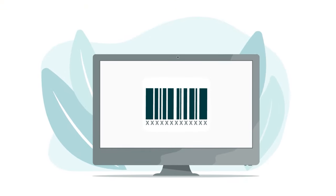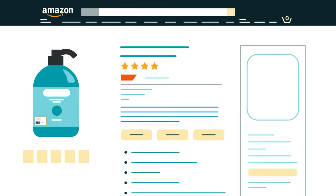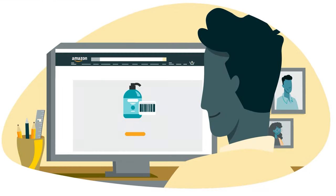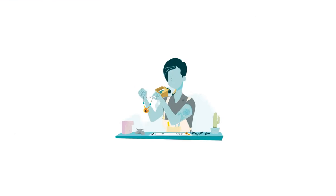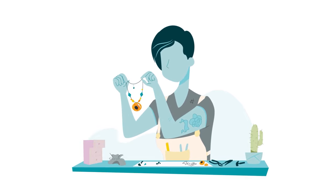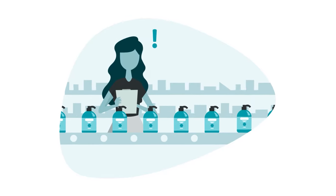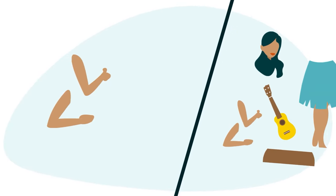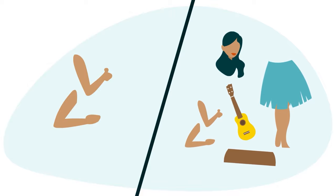There are a few cases in which a GTIN is not required to create a product detail page. In those cases, you'll apply for a GTIN exemption instead. This could occur if you're selling a private label or handmade product for which the brand, manufacturer, or publisher does not provide a GTIN. You might also apply for an exemption if you're selling product parts or bundled products in a single pack.